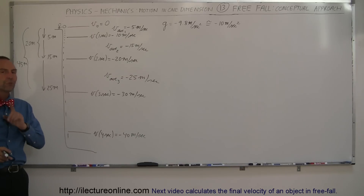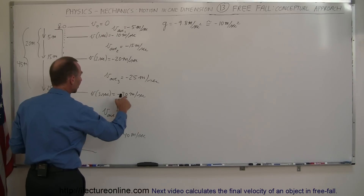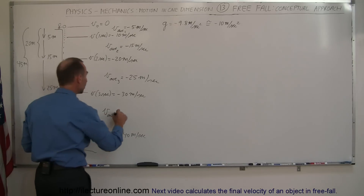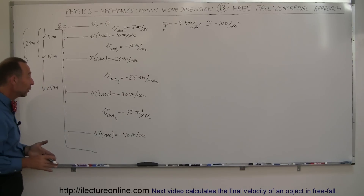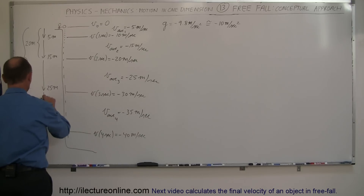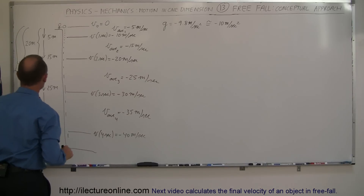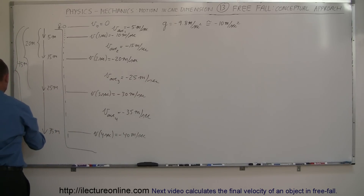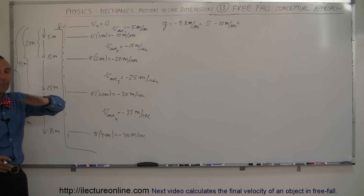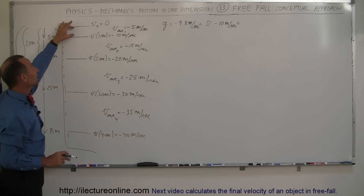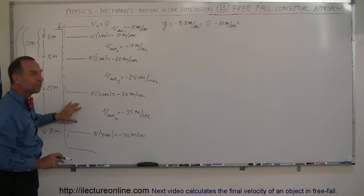How far did it travel during the fourth second? Using the same logic: the average velocity, starting at minus 30 and ending at minus 40, would be minus 35 meters per second. So it dropped 35 meters during the fourth second, making the total distance after four seconds 35 plus 45, or 80 meters. Notice that every consecutive second it drops 10 meters more than the second before: 5 meters in the first second, 15 in the second, 25 in the third, and 35 in the fourth.